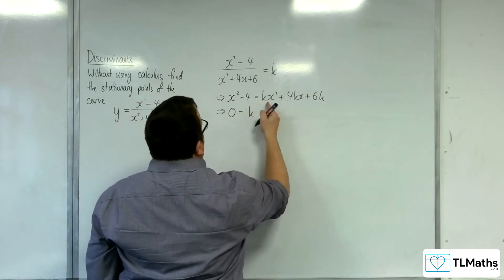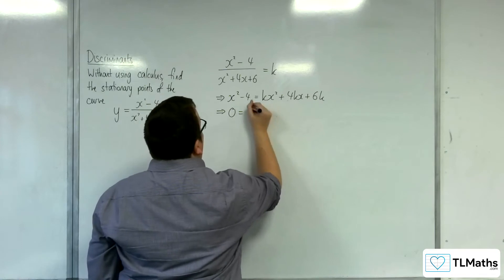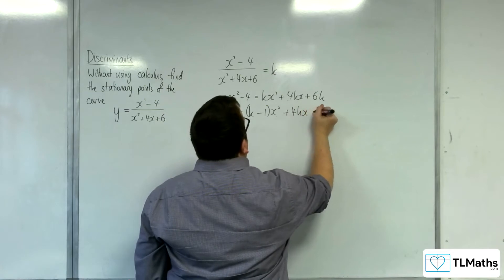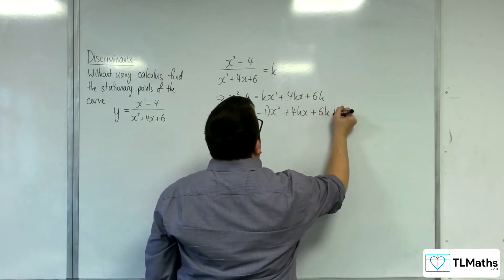So, we're going to have kx squared take away x squared. So, k take away 1x squared plus the 4kx plus the 6k and plus the 4.